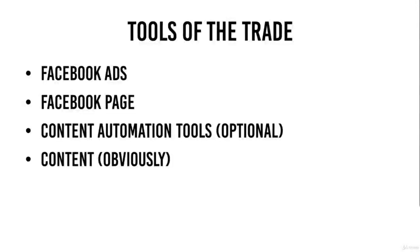These are the tools of the trade we are going to be using. We're going to be using Facebook ads, and we obviously have to have a Facebook page. Optionally, we can have content automation tools — I really don't use them, but if you want to put everything on autopilot, you can use some of them and I'm going to show you some. And the next one is obviously content. Those are the main four things we need.